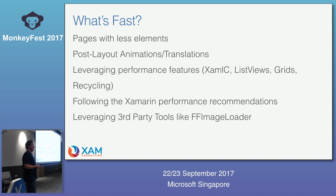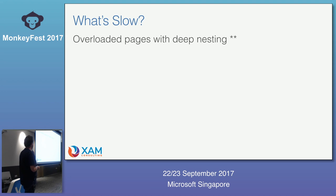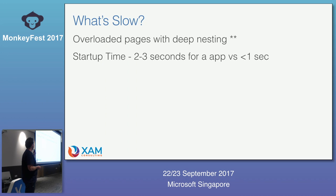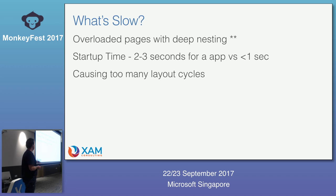Android has an issue where every time you load an image it turns it into a bitmap, so if you load a really large image you'll run out of memory quickly. FF image loader will resize and cache images for you. Overloaded pages with deep nesting slow Xamarin Forms page load. Startup time is something Xamarin is trying to fix — there's always going to be about a two-second startup time. Too many layout cycles and dynamically building your elements, and ignoring recommendations, all slow things down.